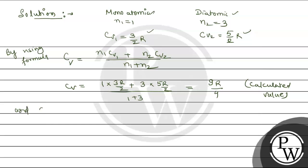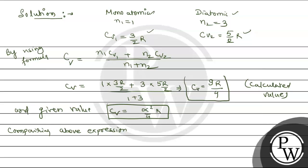The given value is Cv equals to alpha squared by 4R. Comparing these two expressions, that is the given expression and the calculated expression for Cv, we get alpha squared equals 9.